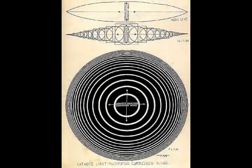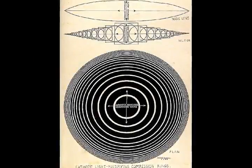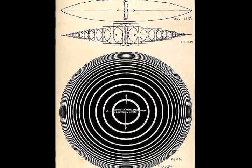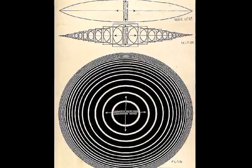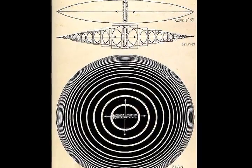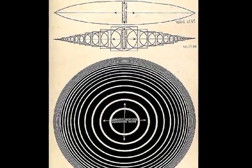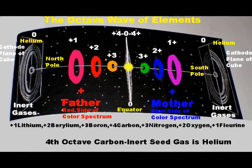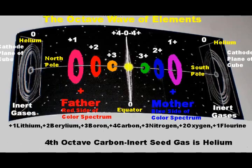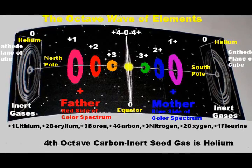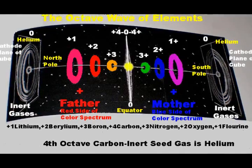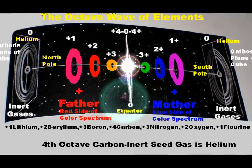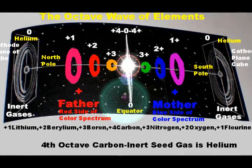Biconvex electric light lenses compress electricity inward, generating heat, higher potential, and rapid spiraling vortex motions. These are formed from cathode waves which compress spiraling electric waveforms from cathode planes of cold magnetic stillness to anode centers of intense cyclonic fury and heat.